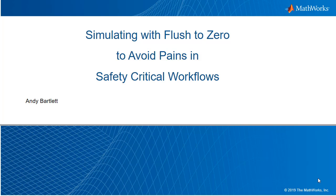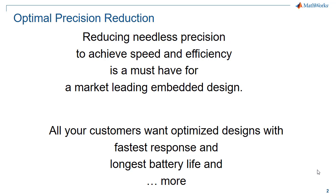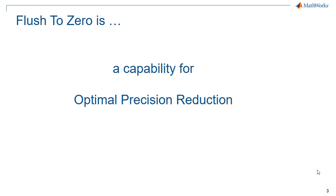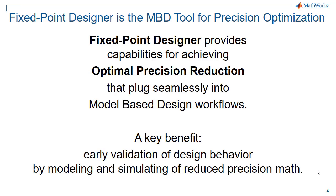This talk is about simulating with flush-to-zero mathematics to avoid pains in safety-critical workflows. Reducing needless precision to achieve speed and efficiency is a must-have for a market-leading embedded design. After all, your customers want designs that have the fastest response, longest battery life, and more. Flush to zero is a capability for optimal precision reduction. Fixed Point Designer is the model-based design tool for precision optimization, providing capabilities for achieving optimal precision reduction that plugs seamlessly into model-based design workflows. A key benefit is early validation of design behavior by simulating with the reduced precision math that will actually be used on your embedded device.